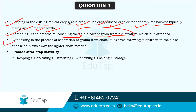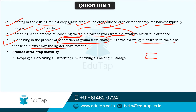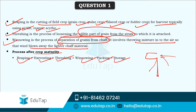Winnowing is the process of separation of grains from the chaff. It involves throwing the mixture into the air so that wind blows away the lighter chaff material — the lighter material falls far off while the grain falls right there. The exact process after crop maturity is: first reaping is done, then harvesting, threshing, winnowing, packing and storage. This is how the entire flow or chain goes.